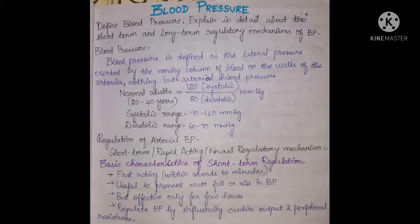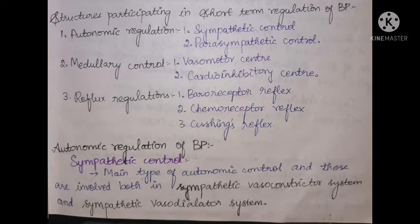Regulation of arterial blood pressure: short-term, rapid-acting, or neural regulatory mechanisms. Basic characteristics of short-term regulation: it is fast-acting, acting within seconds to minutes, useful to prevent acute fall or rise in blood pressure, but effective only for a few hours. Short-term regulation mechanisms regulate blood pressure by influencing cardiac output and peripheral resistance.